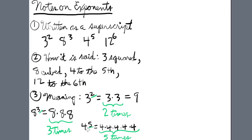Lastly, 4 to the 5th means 4 times itself 5 times. Now you know.